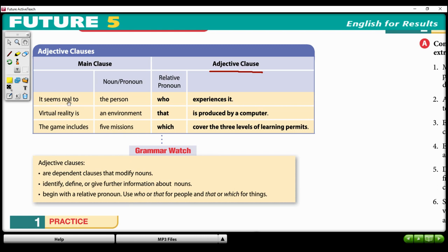So here we have our main clause. It seems real to the person. And then here, we say, well, which person? And they're talking about virtual reality in this sentence. So virtual reality seems real to the person. And which person? To the person who experiences it. Or virtual reality is an environment. And then we want to describe that environment. Because this is the noun, okay? The environment that is produced by a computer.